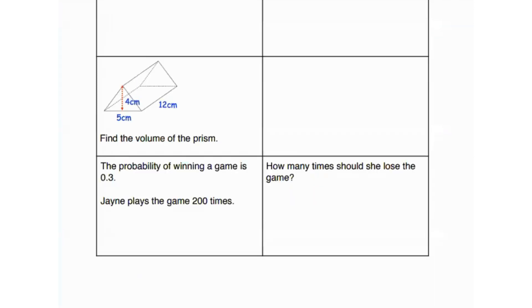Find the volume of the prism. So volume basically equals to cross section area times the length. Cross section area is this triangle. So triangle has an area of one over two times base times height. Four is your height, five is your base, and 12 is your length. So it's going to be one over two times base times height times length.